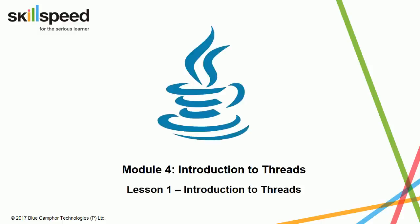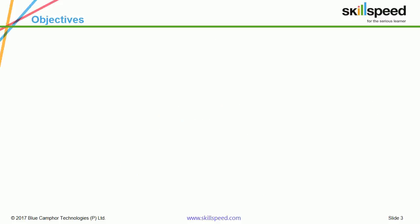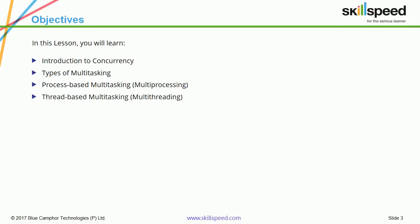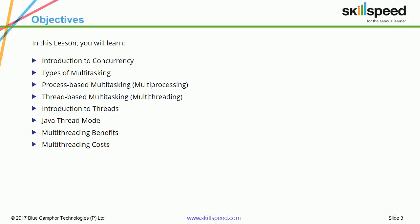Hello all and welcome to module number 4, lesson number 1, which is about Introduction to Threads. In this lesson, we are going to learn the concepts about Introduction to Concurrency, Types of Multitasking, Process-Based Multitasking (Multiprocessing), Thread-Based Multitasking (Multi-Threading), Introduction to Threads, Java Thread Model, Multi-Threading Benefits, Multi-Threading Cost, and Java Thread Lifecycle.